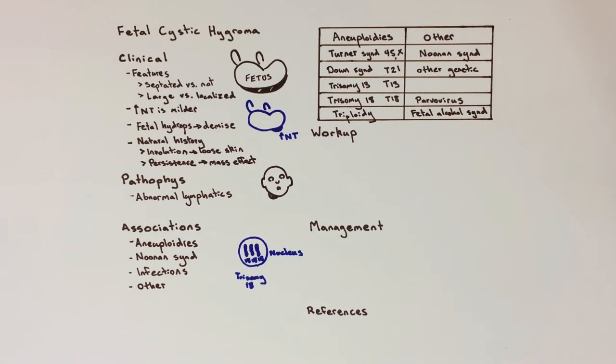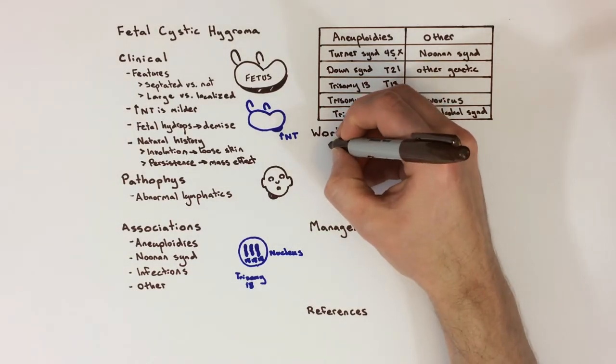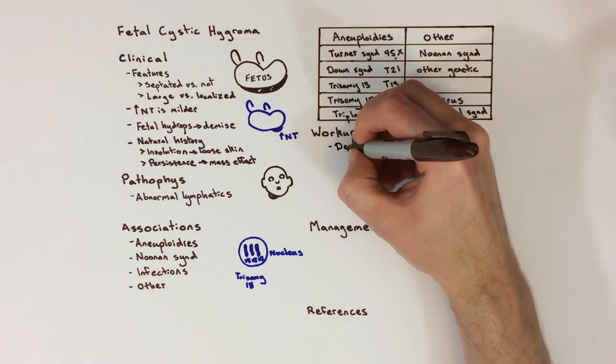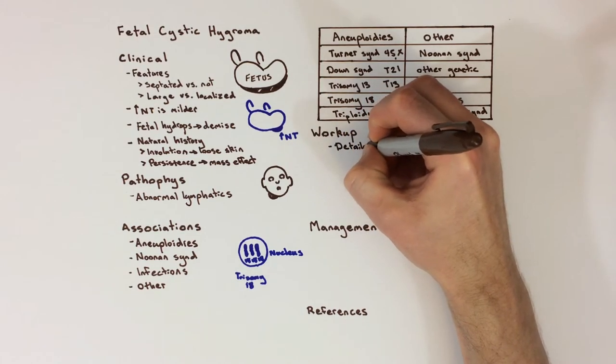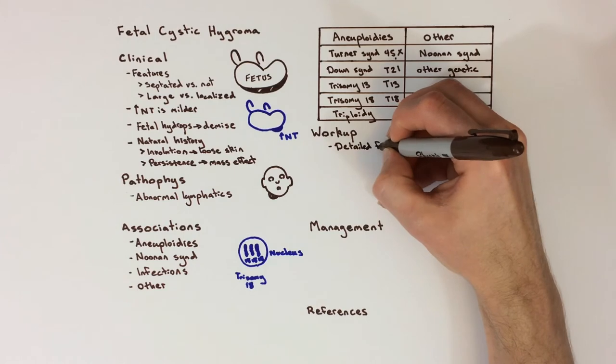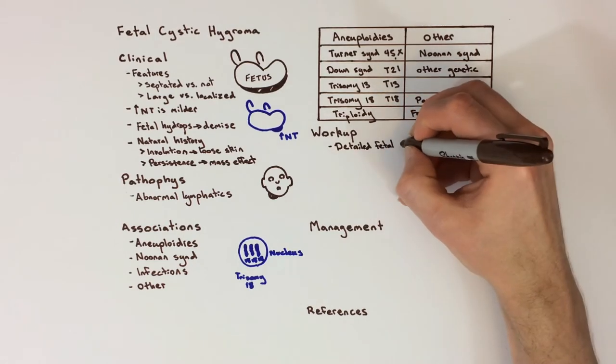When a cystic hygroma is found, a woman should be counseled on the risks of fetal aneuploidy and other possible fetal malformations. This is done either by a high-risk obstetrician, called a maternal fetal medicine specialist, and or by a prenatal genetic counselor or geneticist.